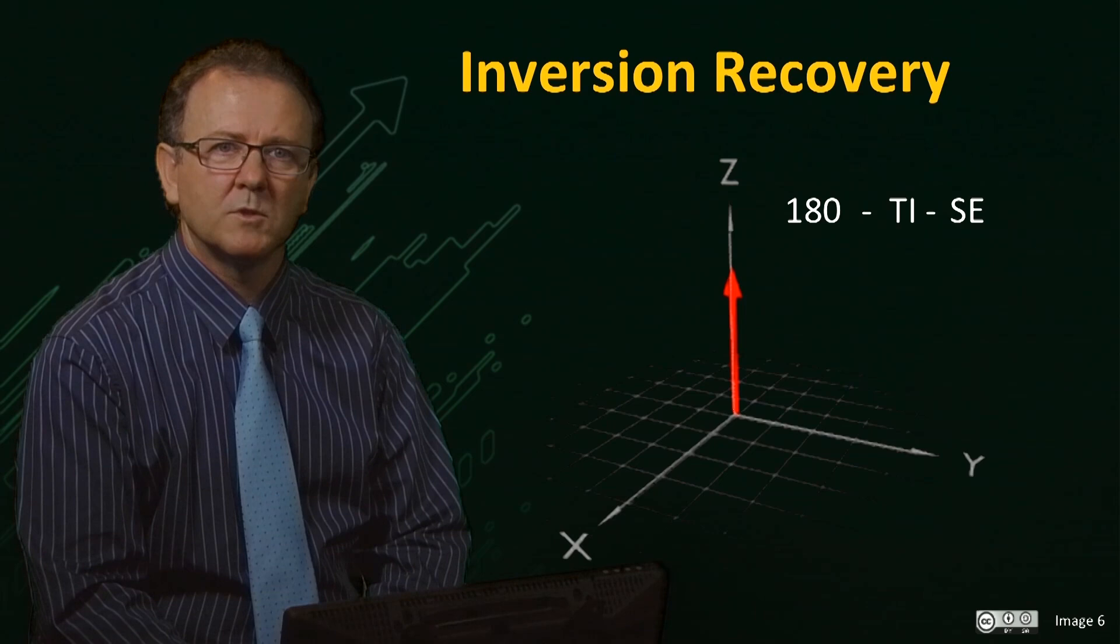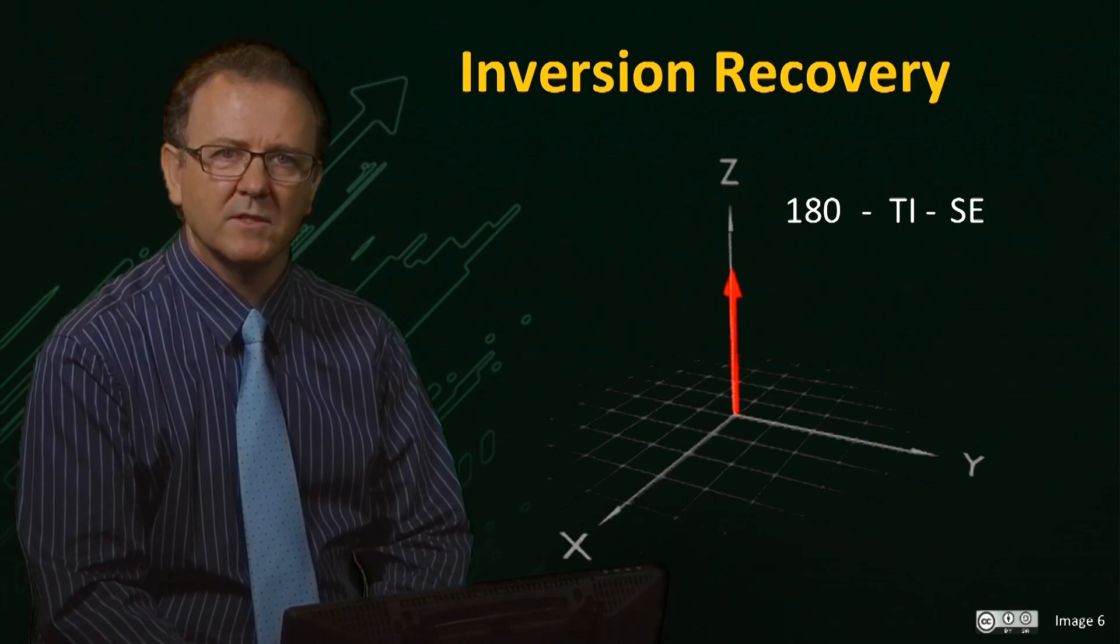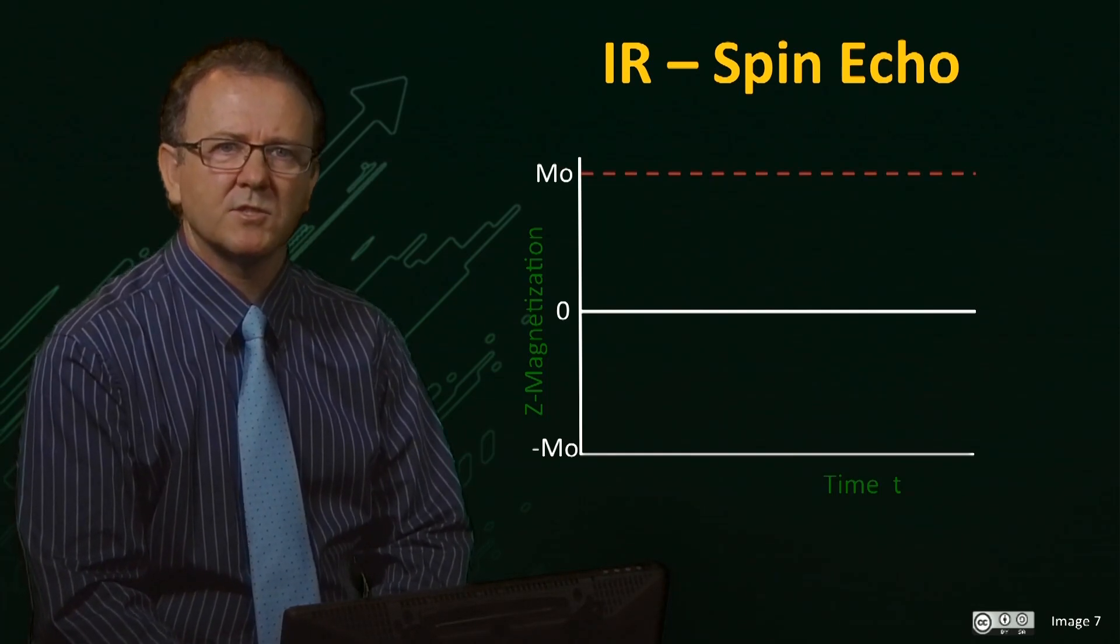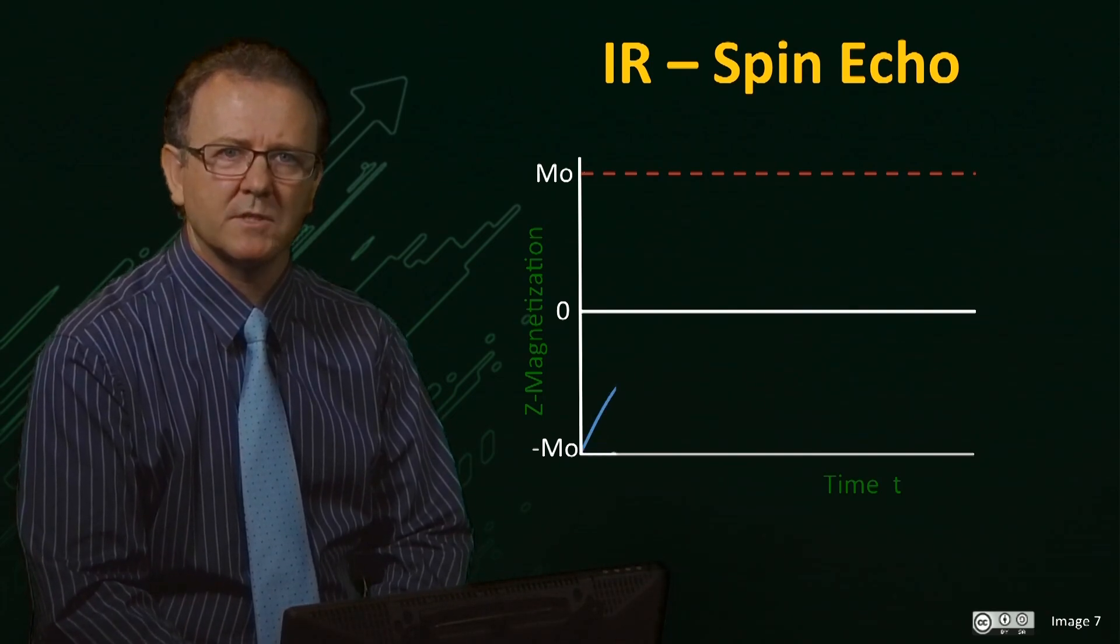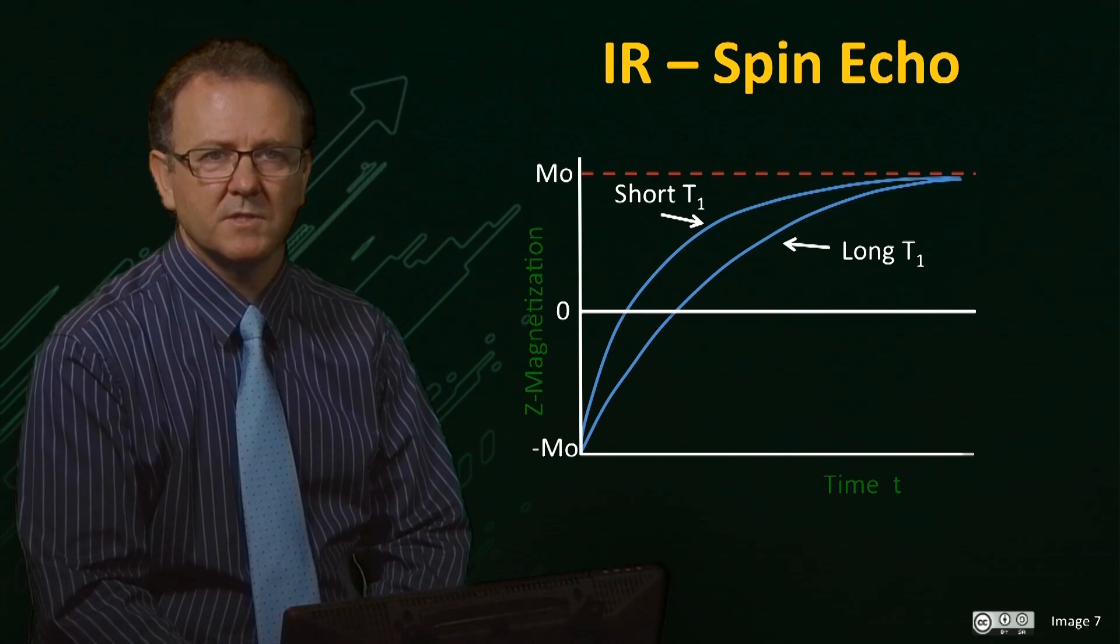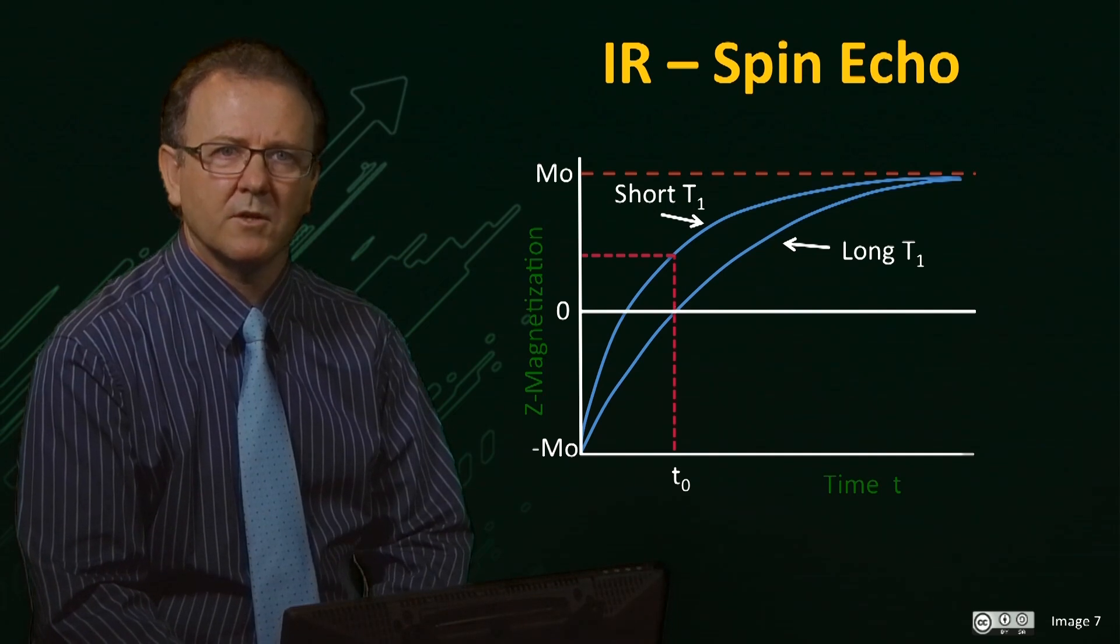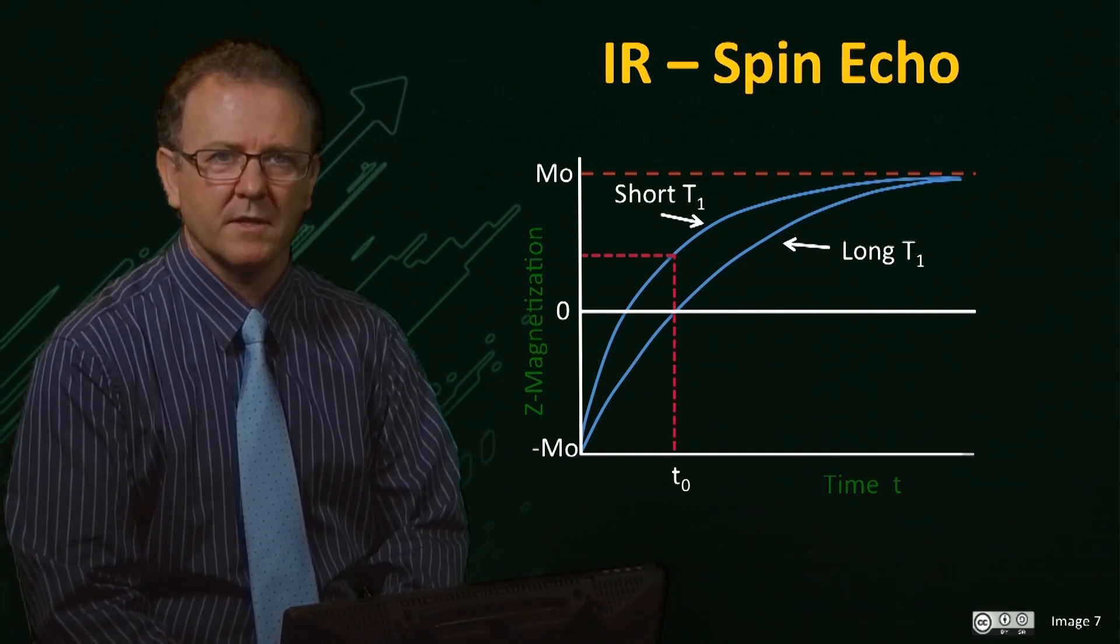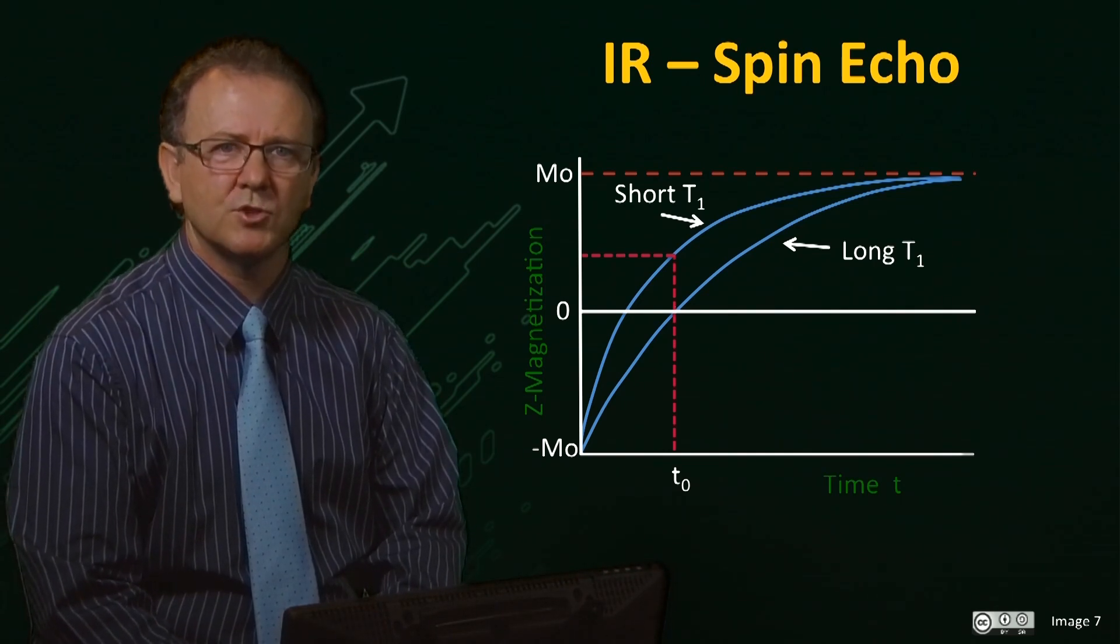Which may exist along the minus Z axis or plus Z axis, depending on the T1 relaxation rate for the tissue and the time TI. Here we plot the Z magnetization as a function of time after the inversion pulse for tissues with a long T1 and a short T1. You will notice that at some point in time, the magnetization passes through zero. Here at T0, the long T1 tissue is at zero, while the short T1 tissue has recovered to a positive value. Therefore, if the spin echo imaging sequence was applied at this point, there would be no signal arising from the long T1 tissue and an observable signal for the short T1 tissue.